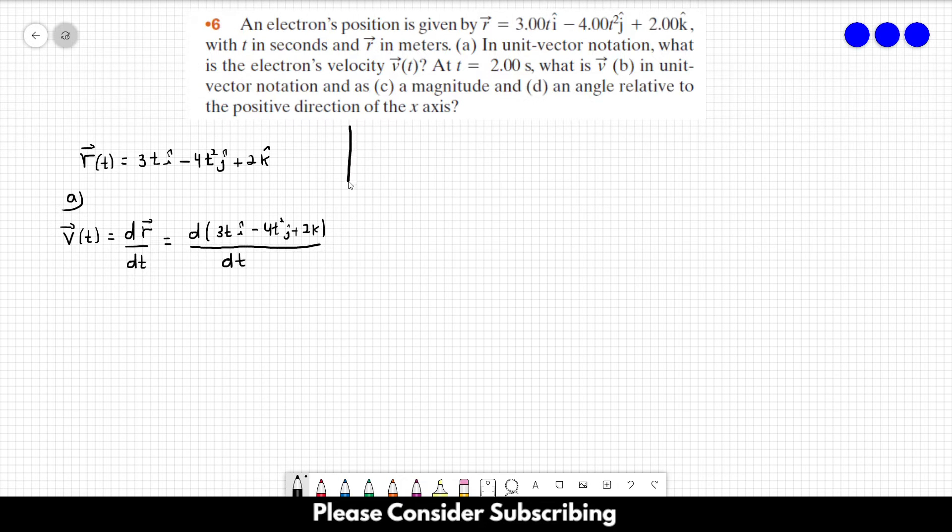So if we do this derivative, we would find 3 in the i direction, minus 8t in the j direction. So vector v is equal to 3i minus 8tj. So this is the answer of letter a.